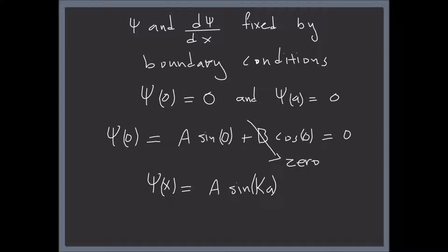We're not done yet, we still have the other condition psi of a. Psi of a must be equal to 0. So if we put psi of a, this is going to be equal to A sine of Ka, this must be equal to 0.